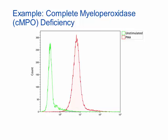The DHR results can give false positives if there is complete myeloperoxidase deficiency. In complete myeloperoxidase deficiency, there is a shift of the PMA-stimulated histogram marked by the red line. Patients with complete myeloperoxidase deficiency are usually asymptomatic, but approximately 5% can have significant infections, often in the context of diabetes.